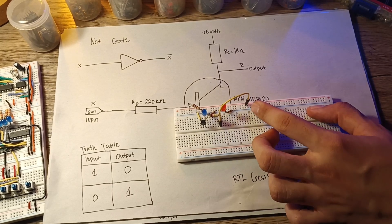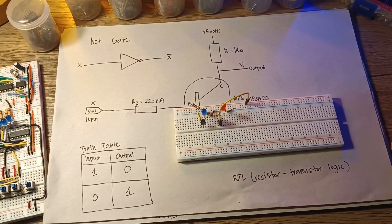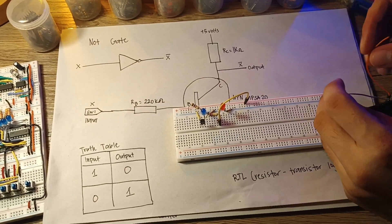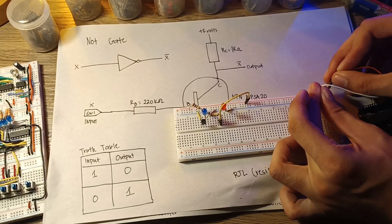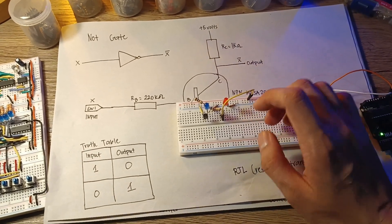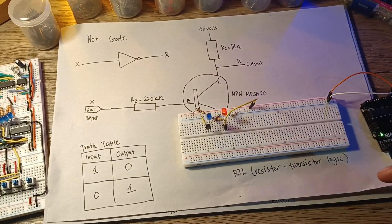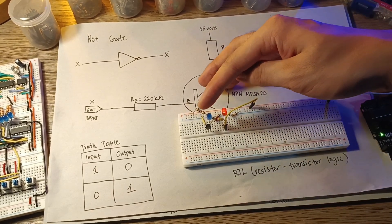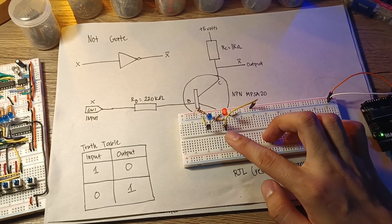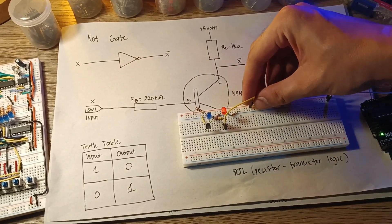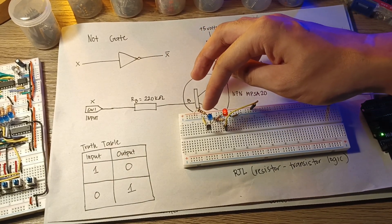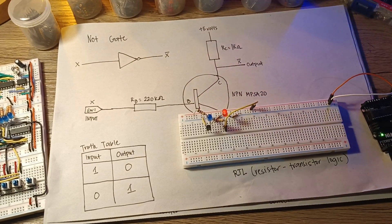As you can see, we inputted a... our input is the red LED, and the output is the blue LED. We input a one, which is 5 volts, because I put this in the positive rail. The output is zero, or nothing, zero volts.